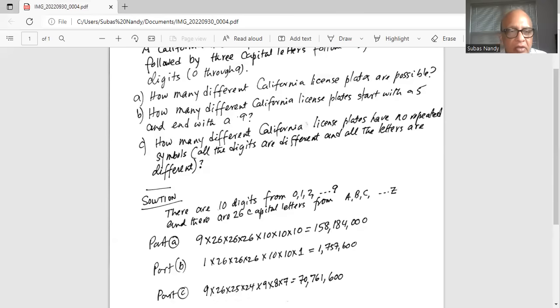And the third one, part C, how many different California license plates have no repeated symbols. All digits are different and all letters are different. You cannot start with zero.